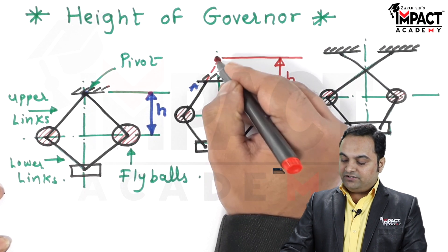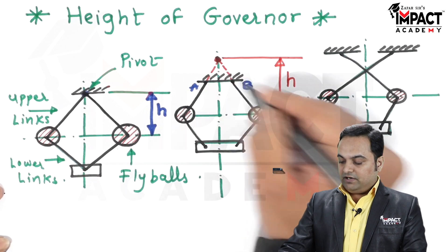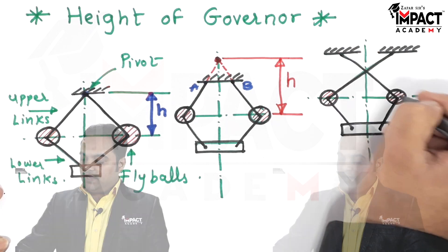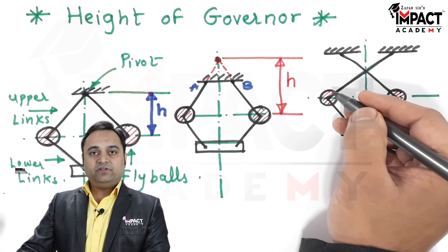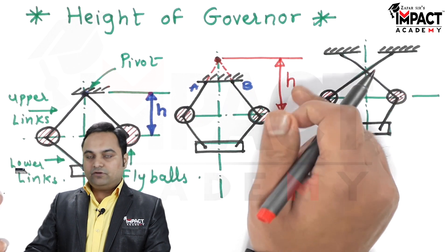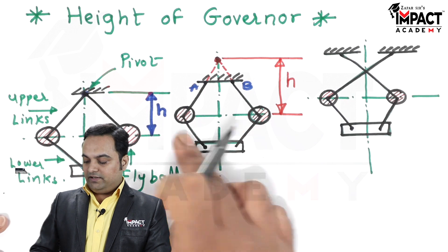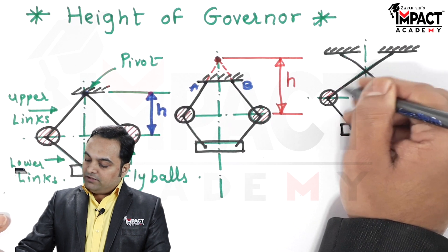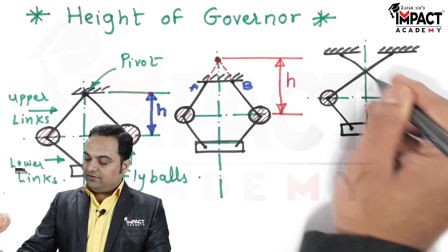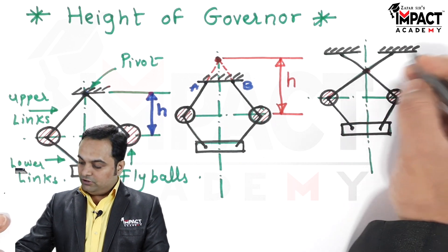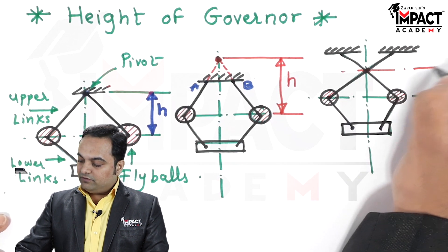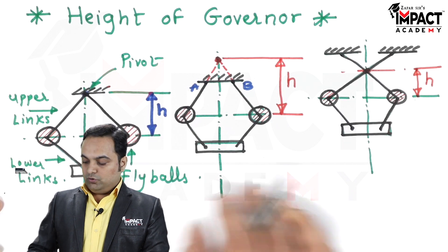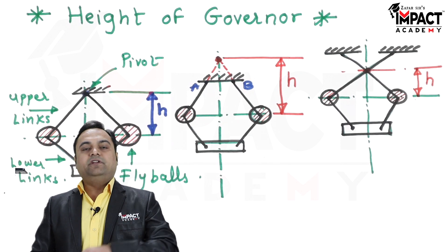For this second configuration, I have just extended the upper arms so that we get the intersection point, and from there up to the center of the fly ball indicates the height of governor. In the third configuration, we have to see the intersection of the upper arms — height of governor is not determined by the lower arms or lower links. In the third configuration, one link and another link are intersecting at a particular point, so the vertical distance between the center of the fly ball and that point is called as the height of the governor.